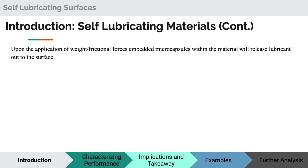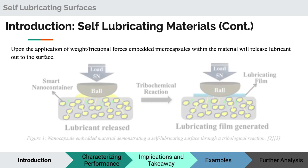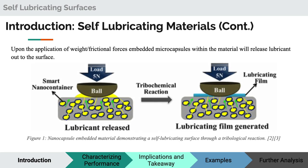So what do these surfaces actually look like? One of the most common implementations is materials that have nanocapsules of lubricant embedded within them. This allows for lubricant to seep through the porous cavities of the material onto the surface when pressure is applied. As you can see in our figure here, when force is applied to the surface of the material it excretes a lubricant from within it.